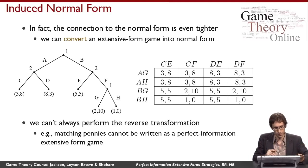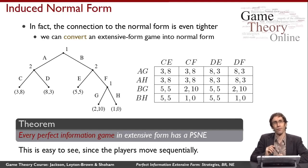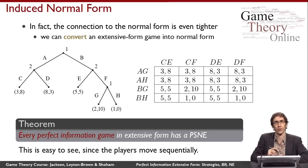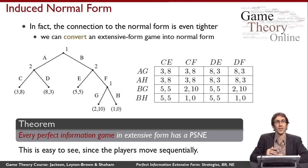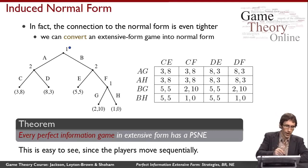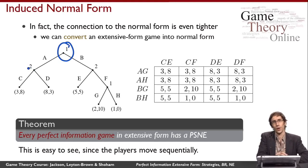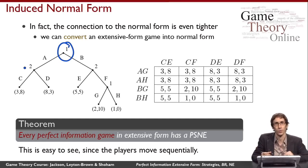There's a theorem that says every perfect information extensive form game always has at least one pure strategy Nash equilibrium — something not true of normal form games in general; matching pennies has no pure strategy equilibrium. Intuitively, randomization often serves to confuse the other player, but in a perfect information game player two still gets to see what player one did. So randomization can't create an equilibrium opportunity that wasn't already there.